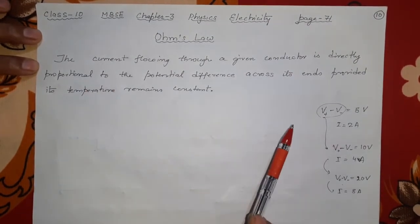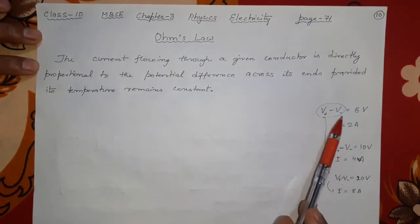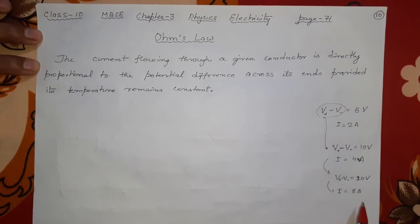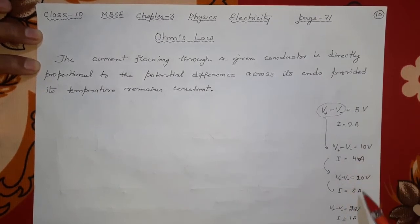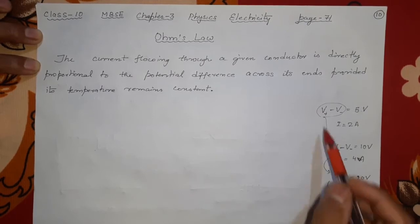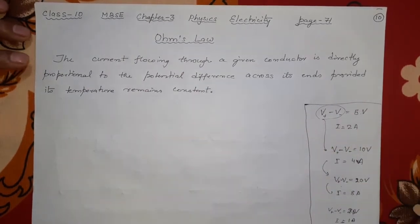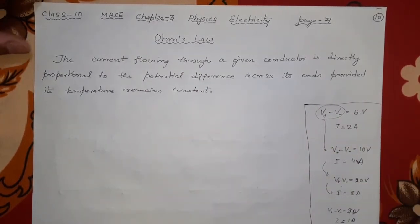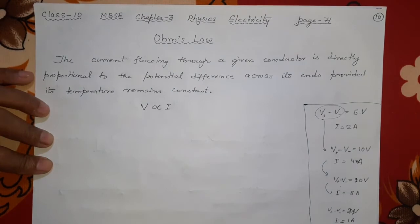This type of dependence means potential difference is responsible for giving you high current. If the potential difference becomes very less — say 2.5 volts — then the current will also become less, perhaps 1 ampere. More potential difference means more current; less means less. This is the meaning of direct proportionality. Systematically we write: V is directly proportional to I.